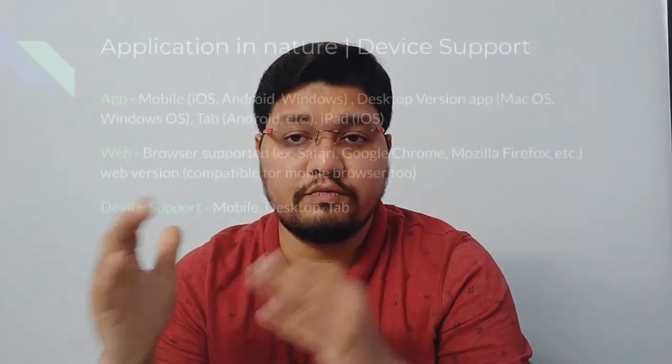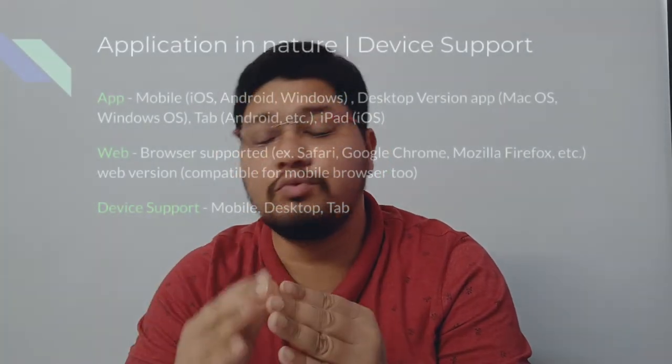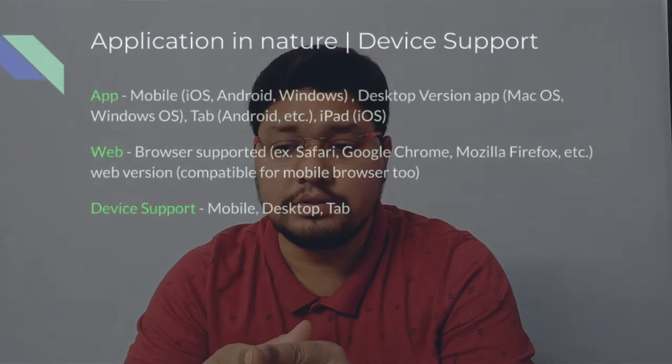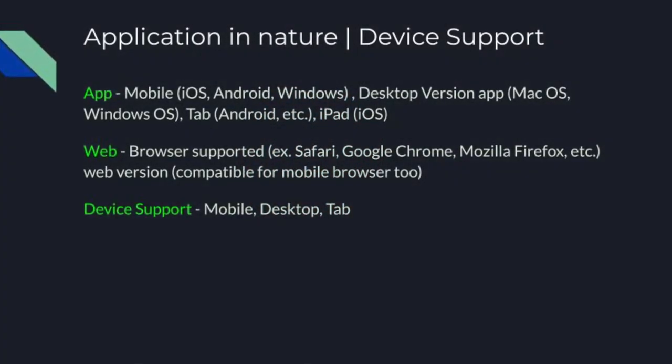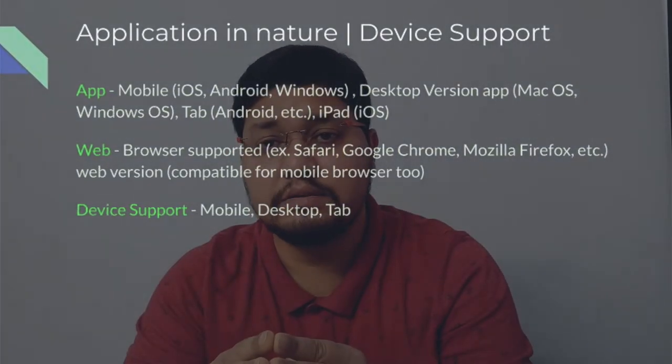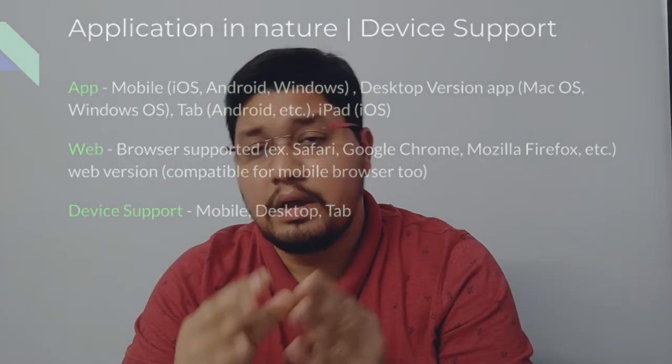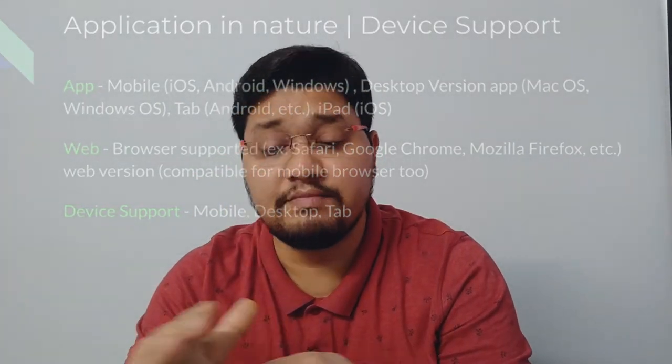Application nature and device support: the application would include a mobile application (iOS, Android, or Windows), a desktop version (Mac or Windows web-supported application), and a browser-supported web version covering Safari, Mozilla Firefox, Google Chrome, and other browsers. Device support would include mobile, desktop, and tablet — all compatible with this application or web version.